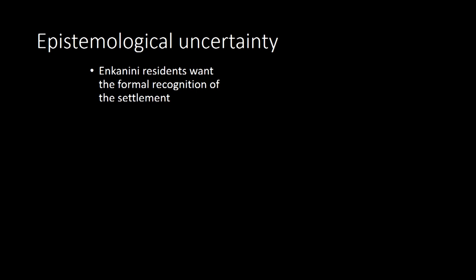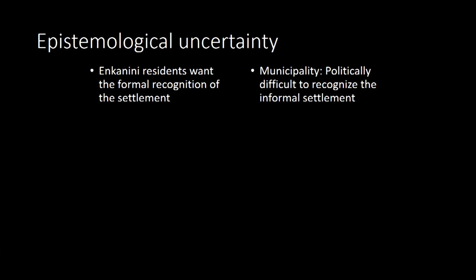Most importantly, the project only took into account technical knowledge and ignored the local knowledge of Nkanini's residents. The request to be connected to ASCOM was seen by residents as a means to obtain official recognition of the settlement and the provision of public services in general. For this reason, they saw the solar panels as a threat to their request — they thought they would no longer be officially recognized because they now had electricity. This is an instance of epistemic uncertainty: by giving privilege to technical knowledge, the problem was misinterpreted and the solution was misguided. Uncertainty arose from framing the problem as a technical issue while ignoring its social and political dimensions.